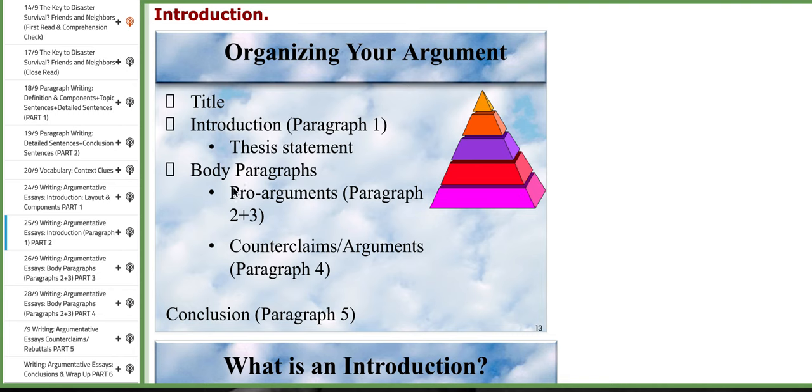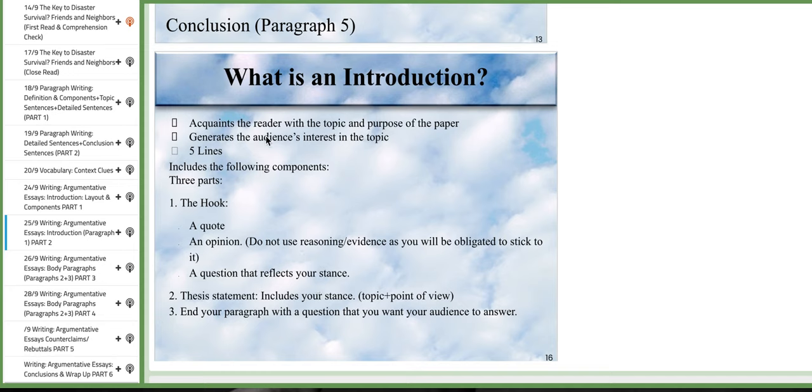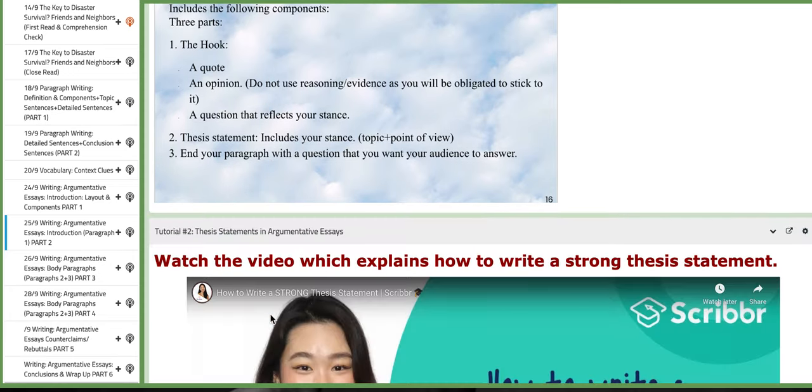And the body paragraphs, you have pro arguments in the body paragraphs coming first, making them the second and third paragraphs. And then you have counterclaims as paragraph number four, and then the conclusion which is paragraph number five. Now in this image you are going to understand exactly how to write the introduction, how to organize it. We're going to explain it further in class.